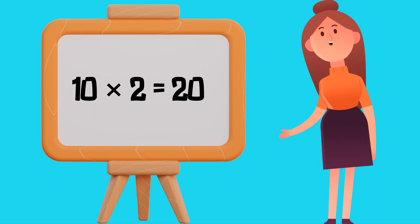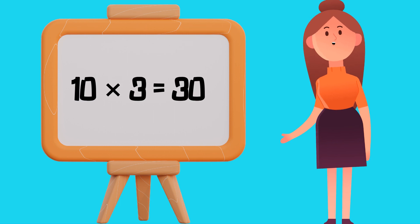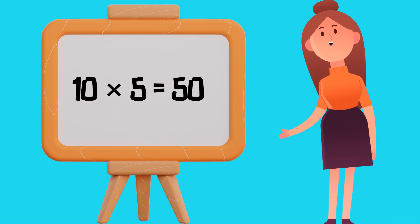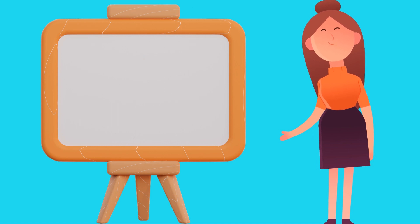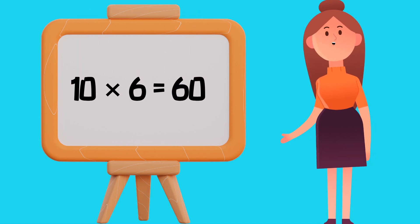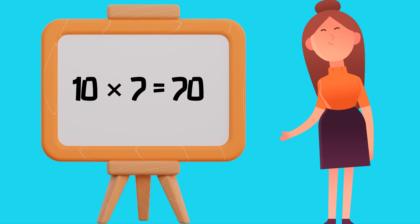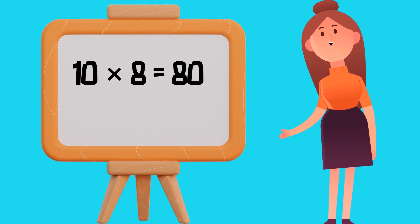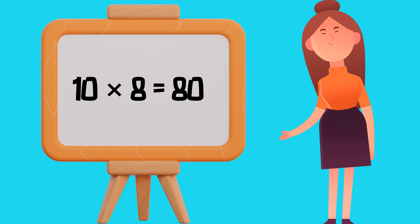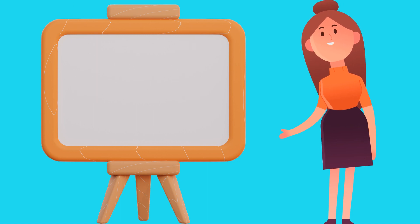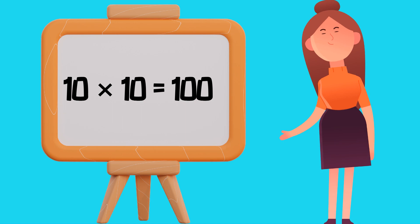Table of 10: 10 1's are 10, 10 2's are 20, 10 3's are 30, 10 4's are 40, 10 5's are 50, 10 6's are 60, 10 7's are 70, 10 8's are 80, 10 9's are 90, 10 10's are 100.